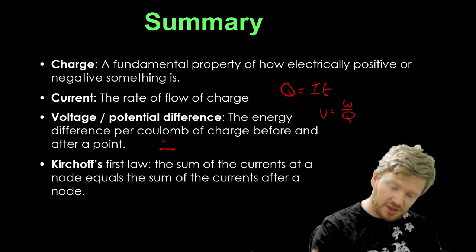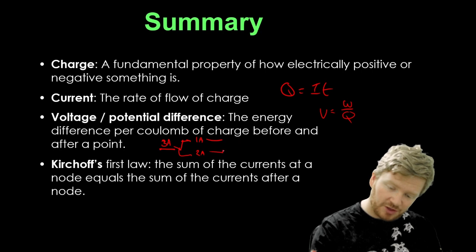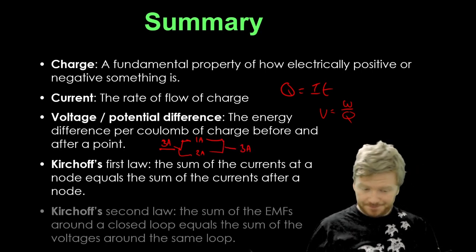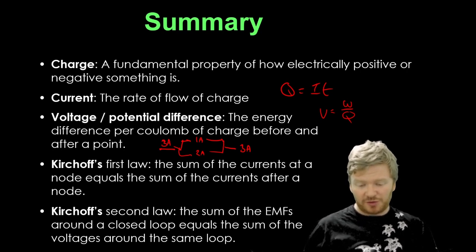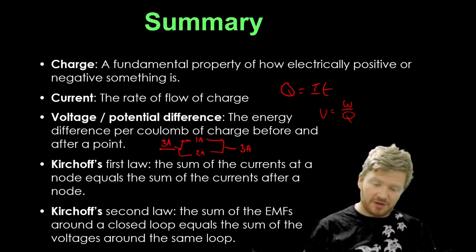So if I have three amps going in, and split into two, then I might have one amp here and two amps there. Or if I have, and then they can recombine, and when they recombine I've got to have three amps again. And then Kirchhoff's second law, the sum of the EMFs around the closed loop equals the sum of the voltages around the same loop.